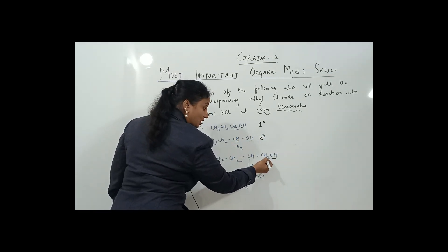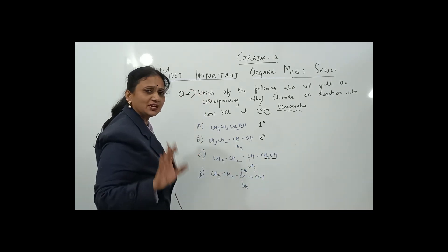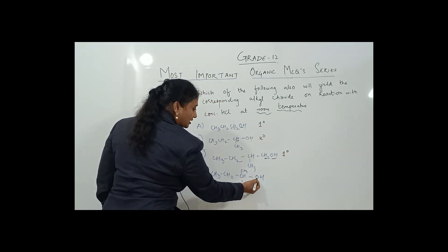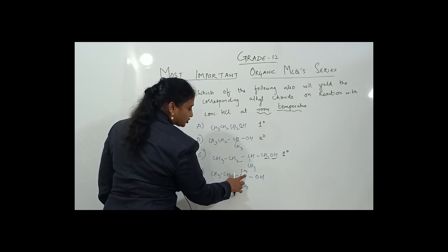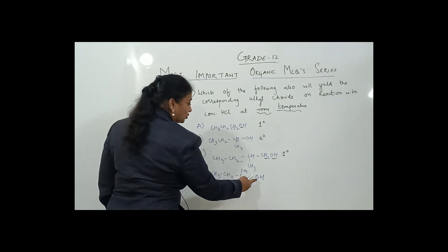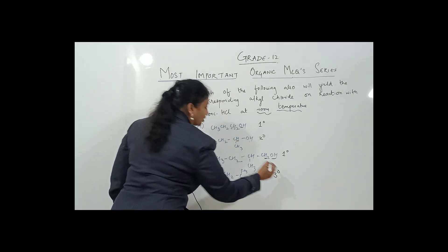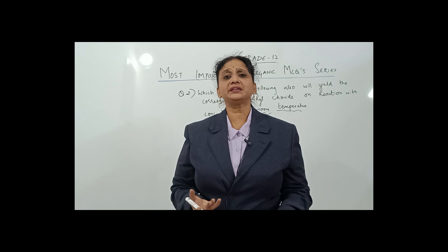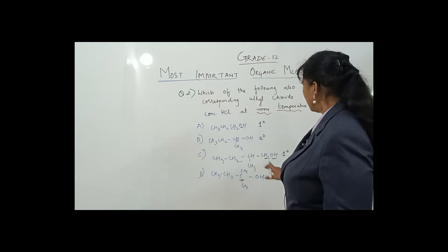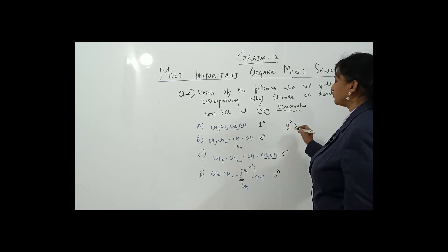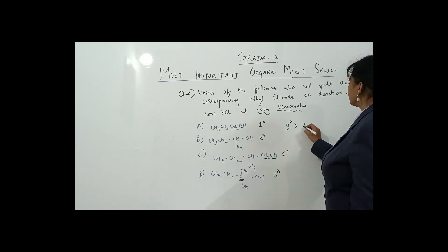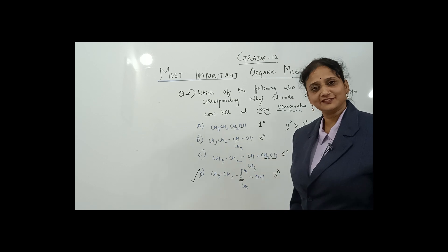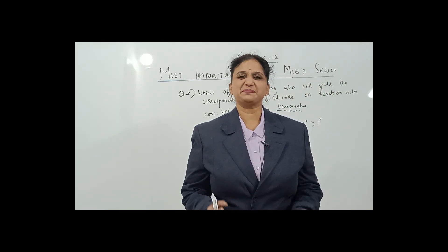Looking at the alcohols: OH attached to a carbon with two hydrogens — primary; OH attached to a carbon with one hydrogen — secondary; OH attached to a carbon with no hydrogens — tertiary. Remember: tertiary alcohols immediately form turbidity at room temperature. So tertiary is more preferred and forms the product faster, then secondary, then primary. The correct option is D.